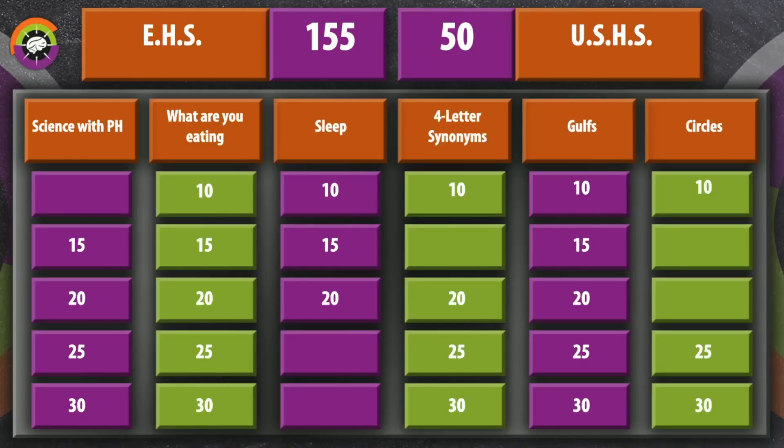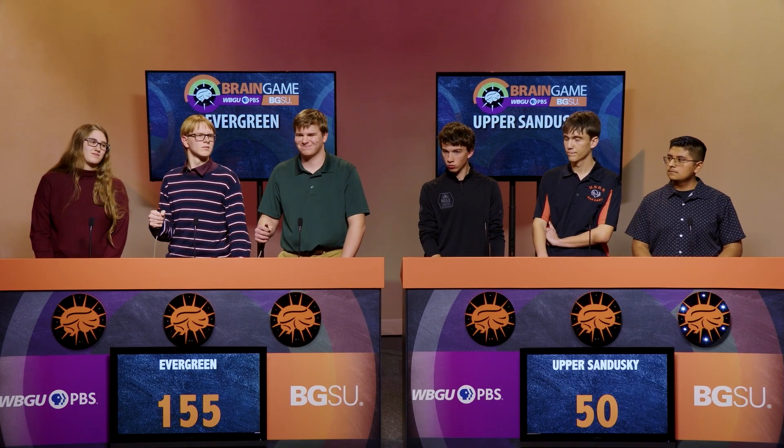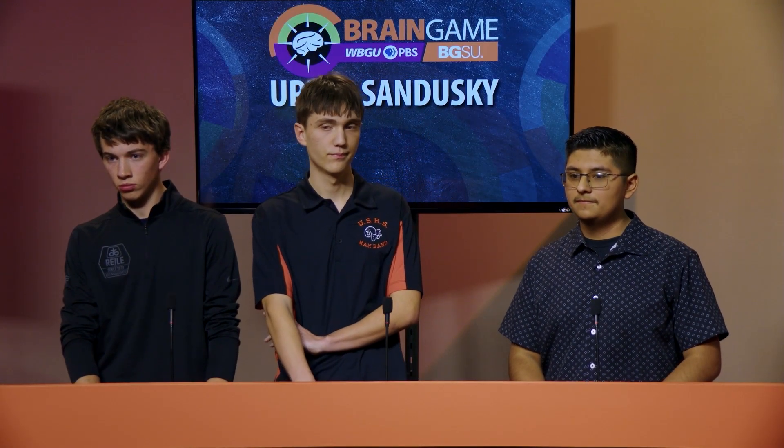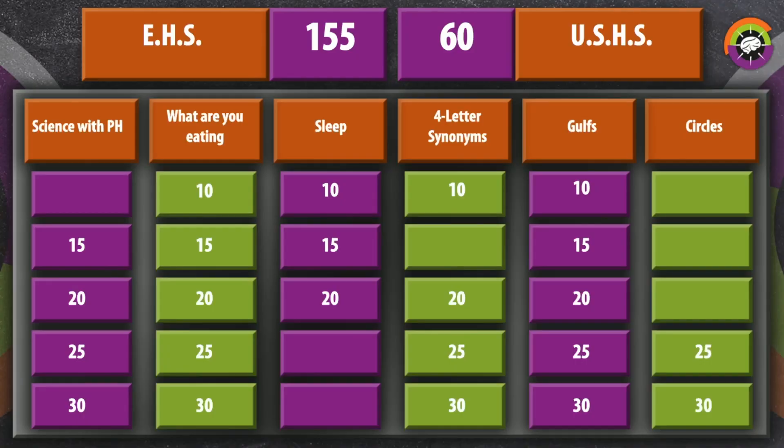Circles for 10 points. What four-syllable word is the name given to the distance around the outside of a circle? Upper Sandusky buzzes in — Sergio answers 'circumference,' which is correct. Upper Sandusky in control.